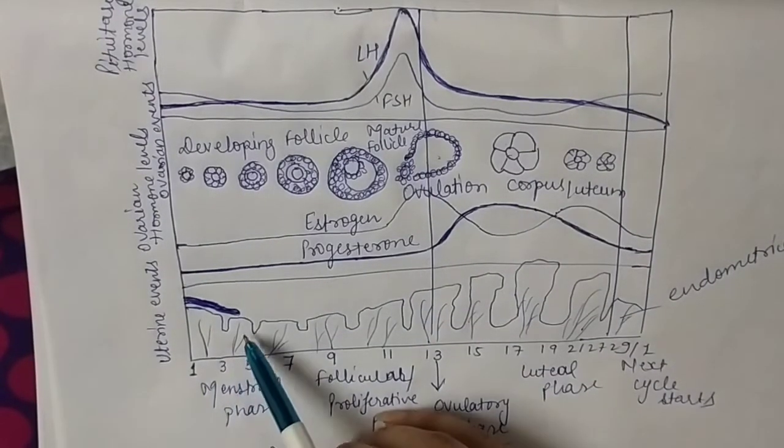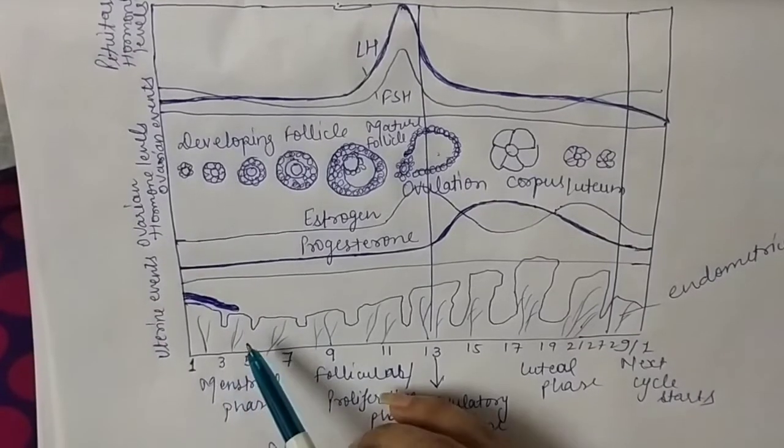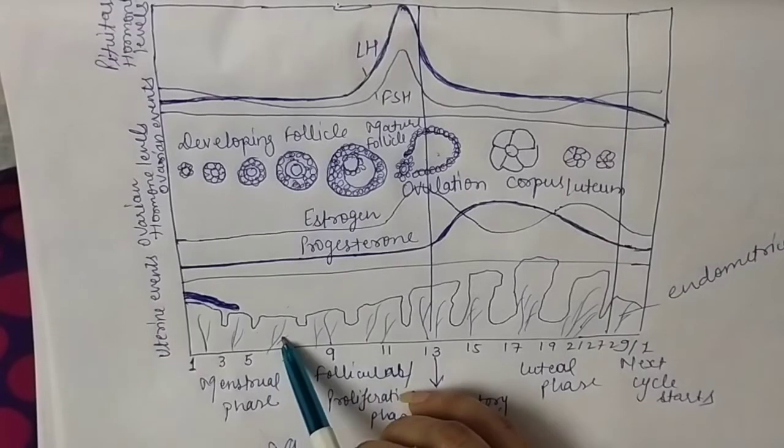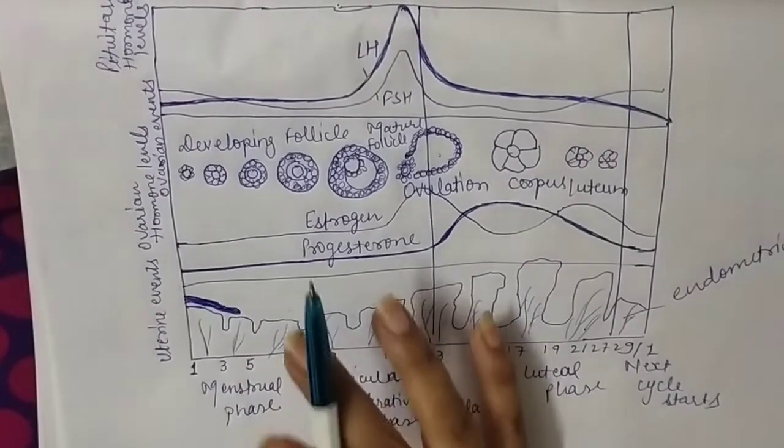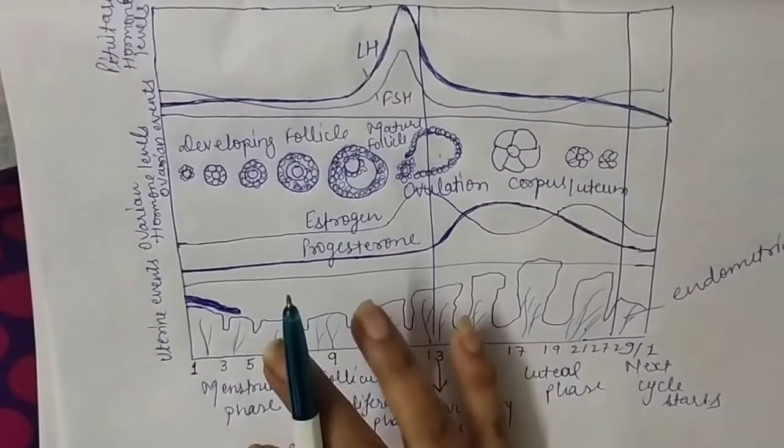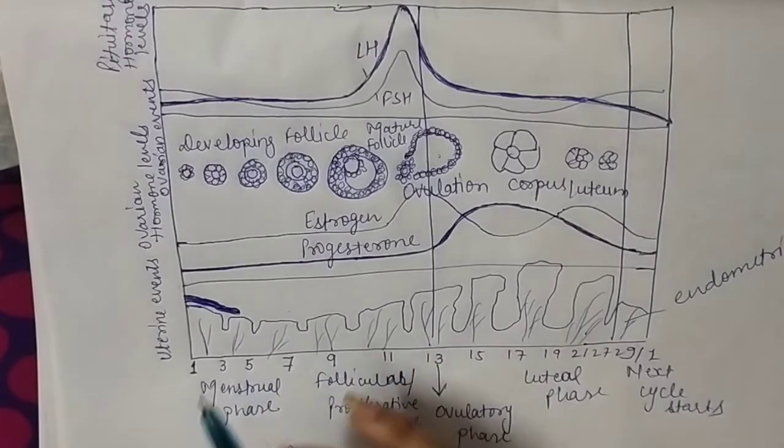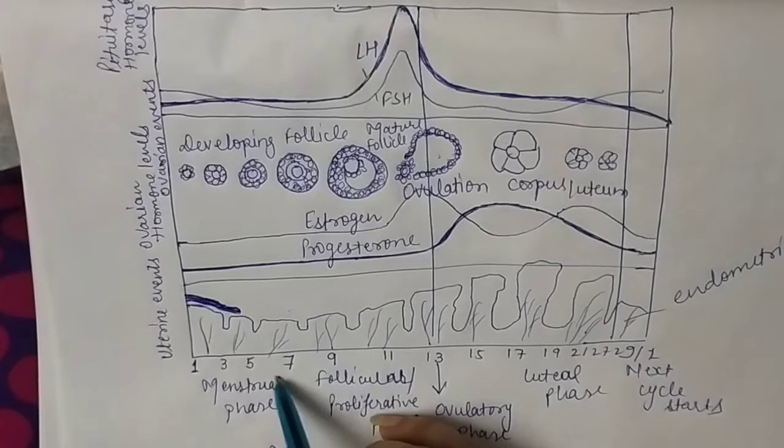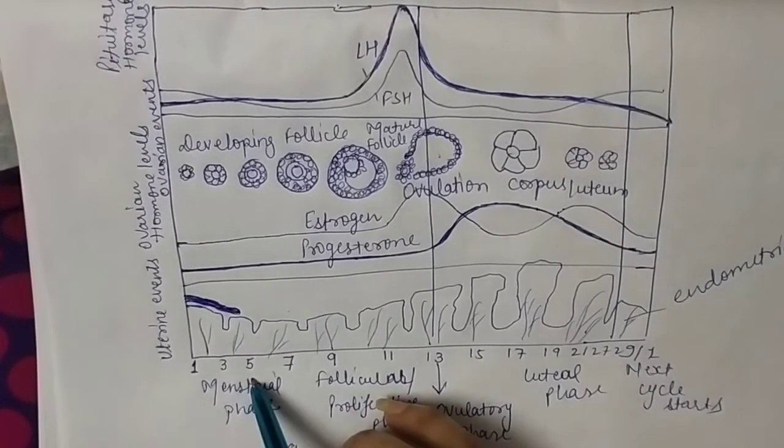When menstruation starts, the ova that was formed doesn't get fertilized by sperm, so the endometrium lining, the ova, and the blood vessels rupture. All the waste material comes out from the vagina in the form of bleeding. This phase is known as the menstrual phase, and the duration is three to five days maximum.